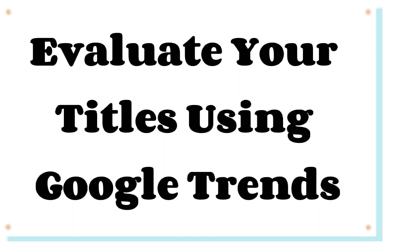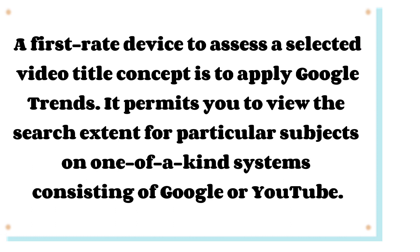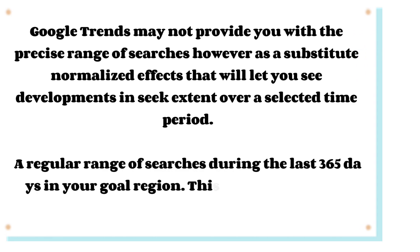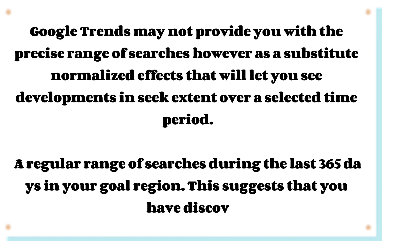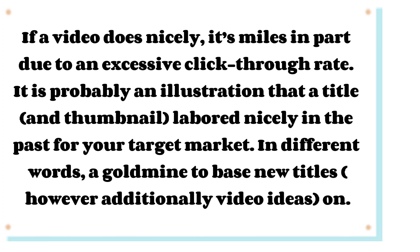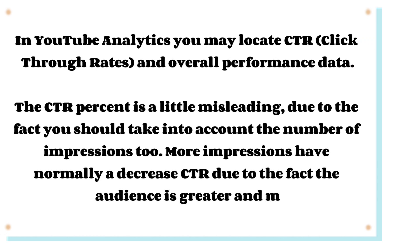Tip 19: Evaluate Your Titles Using Google Trends. Google Trends is a great tool to assess a video title idea — it lets you view search volume for specific topics on platforms like Google or YouTube. It provides normalized results to help you see trends and search volume over a selected time period. Tip 20: Use YouTube Analytics CTR Data. If a video performs well, it's partly due to a high click-through rate. Check YouTube Analytics for click-through rates and performance data to find title and thumbnail combinations that worked well, and base new titles on those insights.